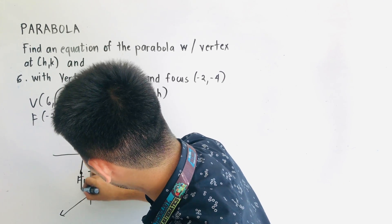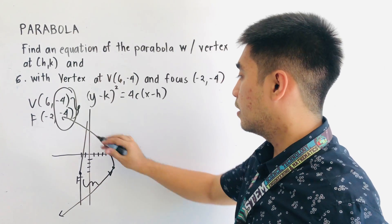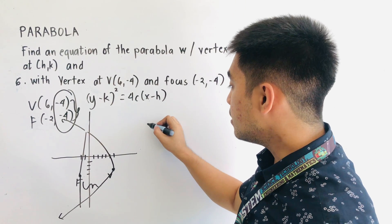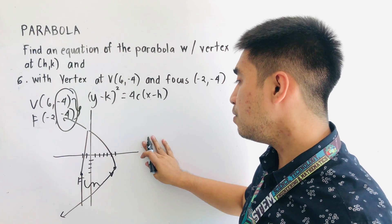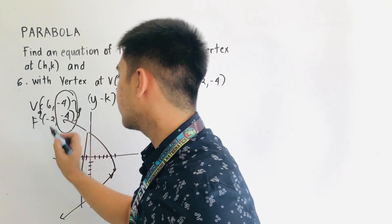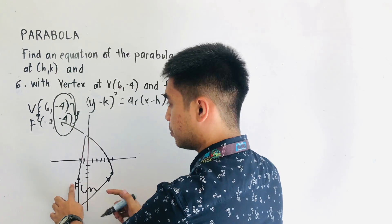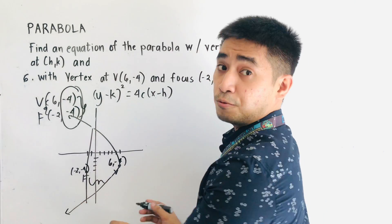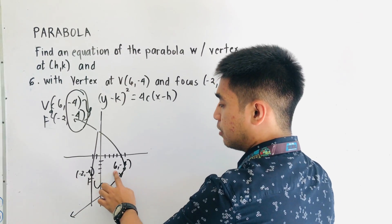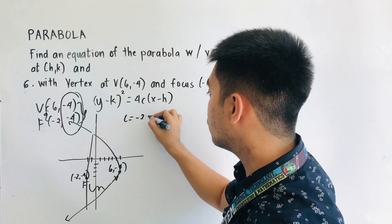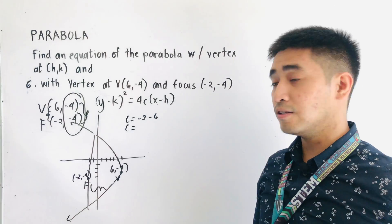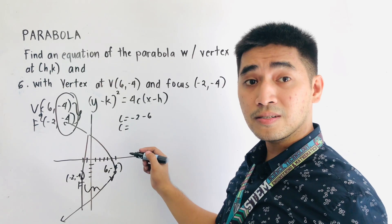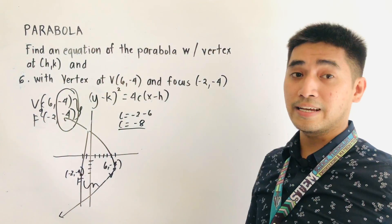This is the length of the latus rectum. Now we are ready to determine the value of C. The focus is located at (-2, -4) and the vertex is at (6, -4). We subtract from left to right: negative 2 minus 6. Therefore, C is equal to negative 2 minus 6, which becomes negative 8. The value of C is negative 8.